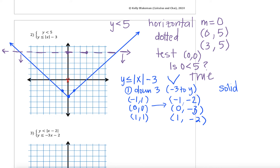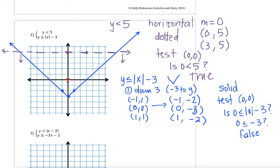Now for this absolute value graph, I still need to figure out the shading. Pause the video and test a point. I'm going to go ahead and test (0,0) since it is not on my boundary line. When I test (0,0): is 0 less than or equal to the absolute value of 0 minus 3? Simplifying, that's is 0 less than or equal to negative 3. That is a false statement — 0 is definitely not less than a negative number. Since this is false, I do not want to shade where the test point is, so I will not be shading inside the pizza slice. Instead I want to shade outside.